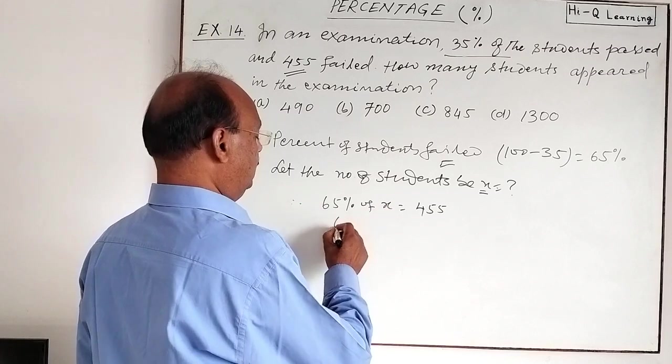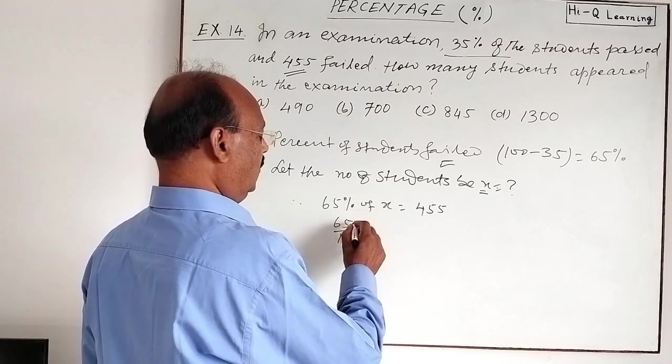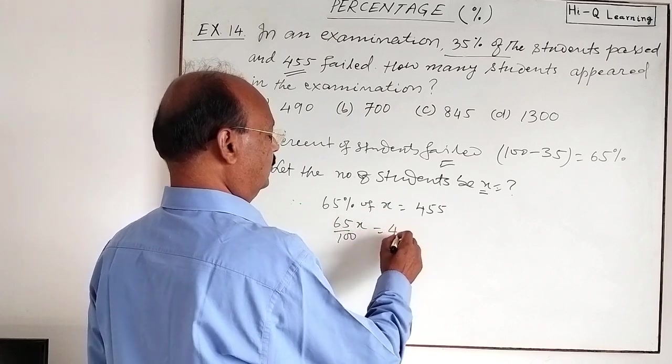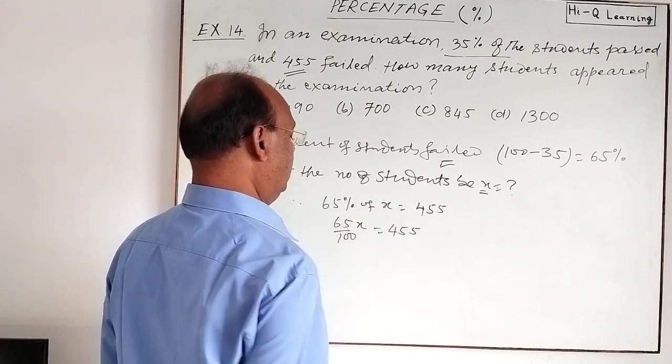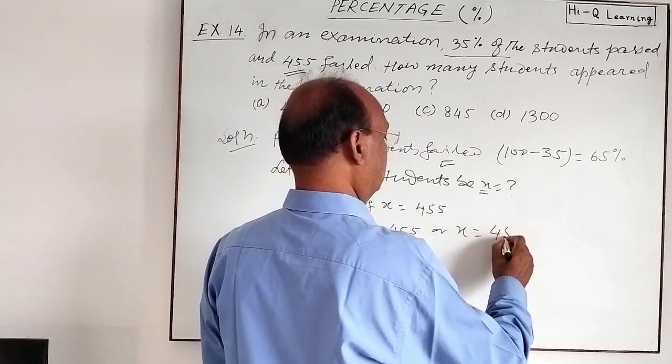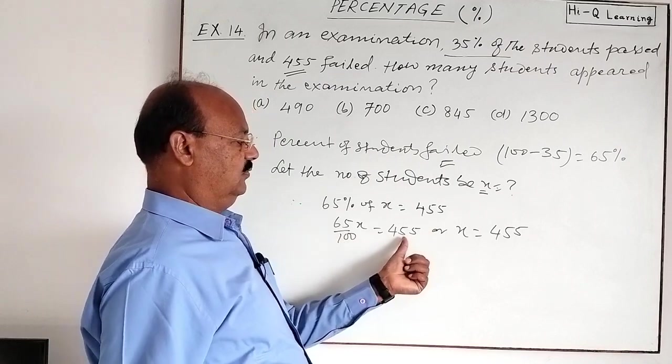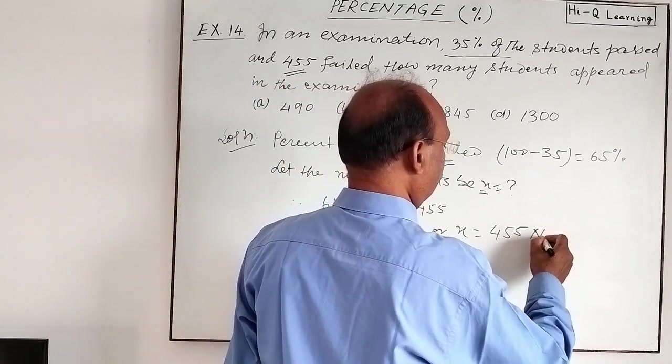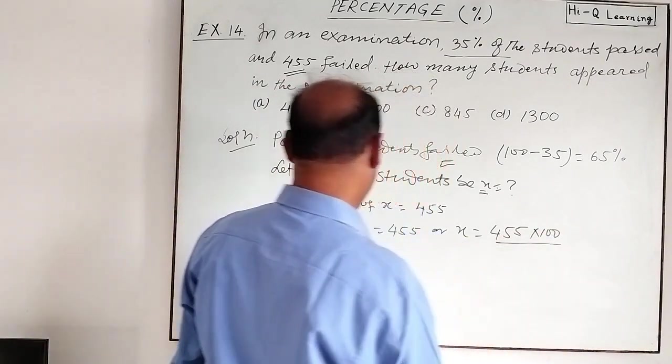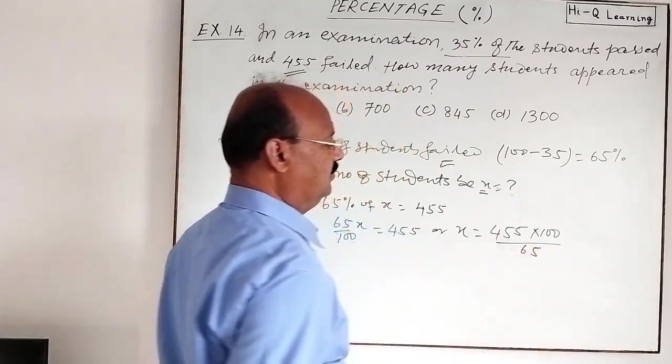By cross multiplication, X equals 455 multiplied by 100 divided by 65. Let us simplify this and we will get the answer.